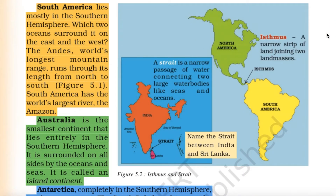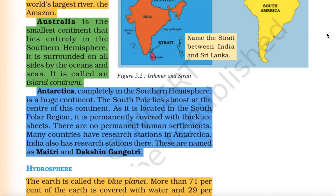South America lies mostly in the southern hemisphere. The Andes, the world's longest mountain range, runs through its length from north to south. South America has the world's largest river — the Amazon. Australia is the smallest continent and lies entirely in the southern hemisphere. It is surrounded on all sides by oceans and seas and is called an island continent.